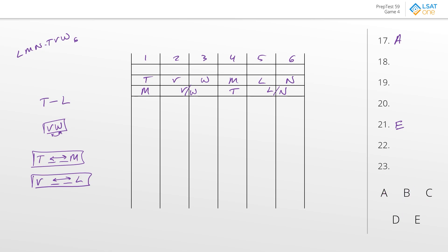Back to question 18 — what must be true? Answer A: Toronto in year one — no, we've seen Montreal there, so that doesn't have to be true. Answer B: M in year four — no, we've seen Toronto in year four too. Answer C: T before M — no, in the scenario from question 21 T was after M. Answer D: N is immediately next to V — in both scenarios N and V were not consecutive, so that's not required.